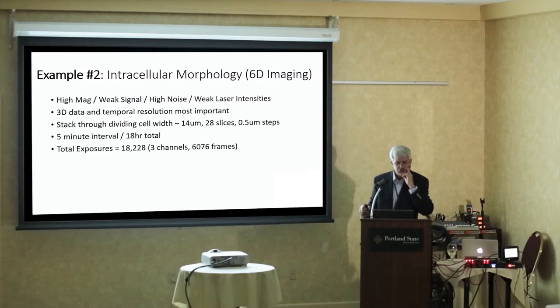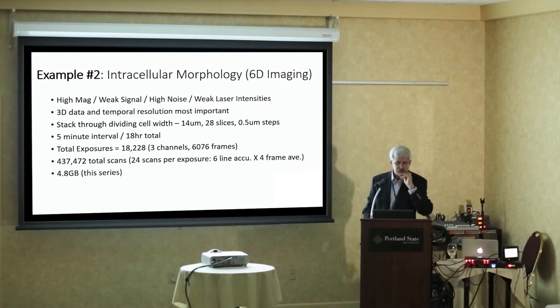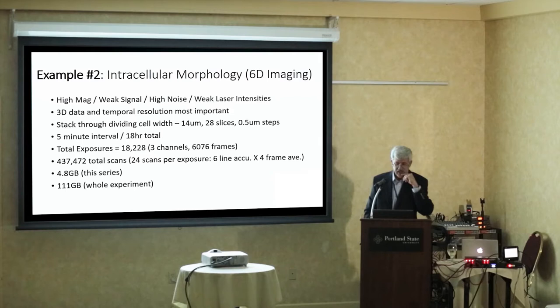Here's where the numbers get mind-bending: three channels, 6,076 frames equals 18,228 exposures, which equals 437,472 total scans — because each scan involves six lines of accumulation times four averages in three channels. That one set is 4.8 gigabytes, and that's only one out of 20 positions. The entire experiment was 111 gigabytes — one file. You hit save and go away for an hour.